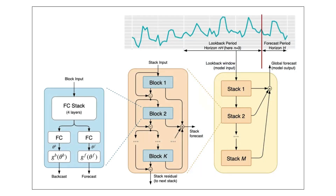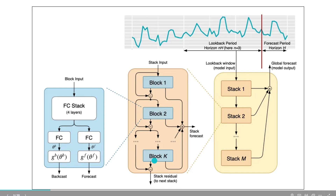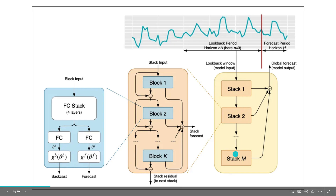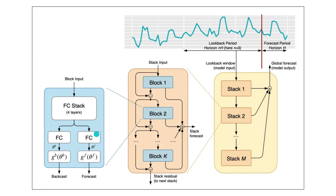Let me quickly show you the overall architecture. We have the time series at the top. This is then filtered and processed into several different stacks, from 1 up until M. Each stack is then composed of different blocks from 1 to K. From a block you can either get a forecast or a residual, which then flows into the next stack. Each block is composed of 4 fully connected layers that either produce a backcast or a forecast.